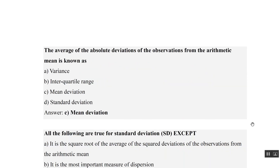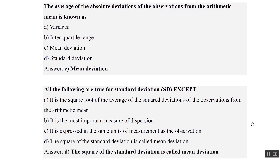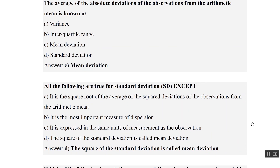Average of absolute deviation of observations from arithmetic mean is known as mean deviation. All are true about standard deviation except: it is the square root of average of squared deviations from the arithmetic mean — true; most important measure of dispersion — true; expressed in same units — yes. The square of standard deviation is called common deviation — that is wrong; it is called variance.